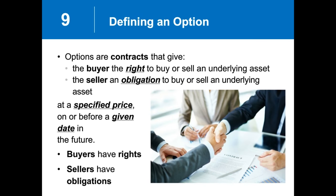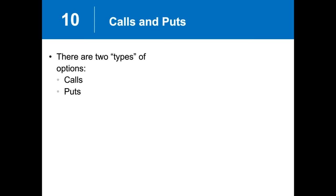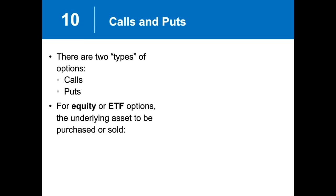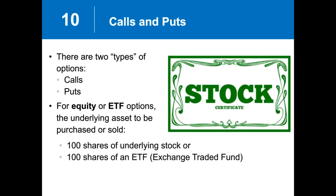There are call options and put options. For equity and ETF options, the underlying asset that will be purchased or sold is 100 shares of stock or ETF. You can either buy a call, buy a put, sell a call, or sell a put — those are the four sides you can trade. The entire universe of options strategies consists of those sides, either outright by themselves or in combination with each other or with a stock position.